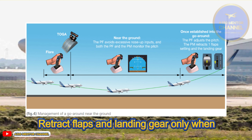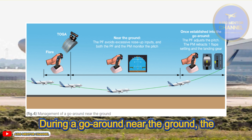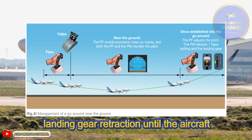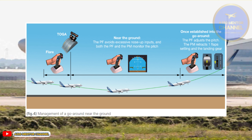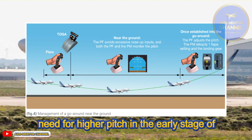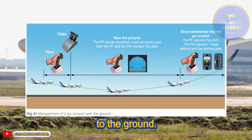Retract flaps and landing gear only when safely established in the go-around. During a go-around near the ground, the flight crew must delay flaps and landing gear retraction until the aircraft is established on its go-around trajectory. Delaying flap retraction prevents the need for higher pitch in the early stage of the maneuver when the aircraft is closer to the ground.